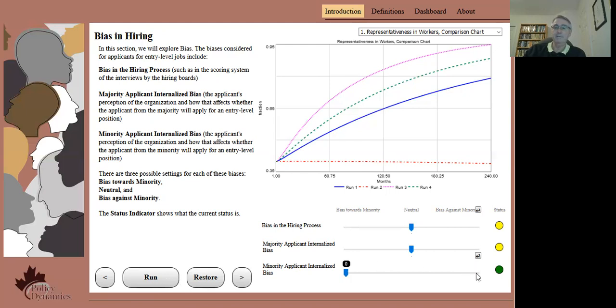Let's finally consider internalized bias against the minority, discouraging them from applying for a job. This slows the progress compared to the unbiased case, but there is still some gains and there is much less negative impact than systemic bias against the minority.